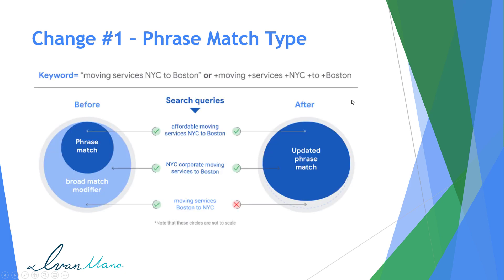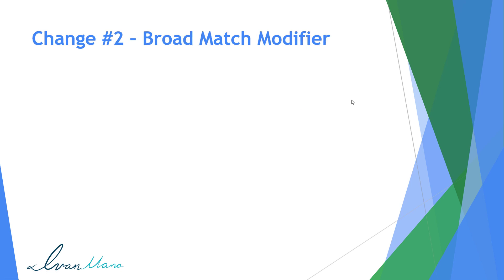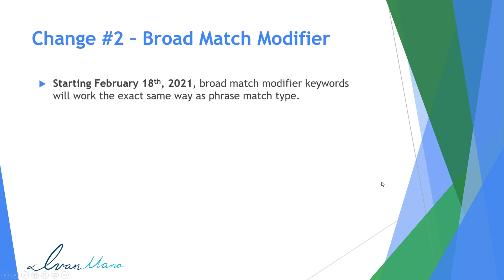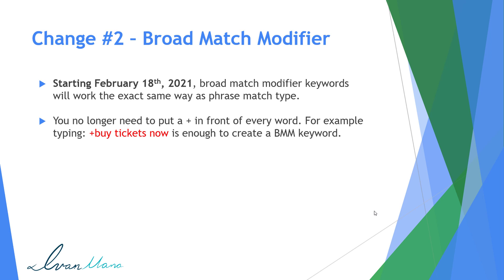So let's talk about broad match modifier type. With phrase match type overtaking the broad match modifier, what's going to happen with broad match modifier? Well, starting February 18th, 2021, broad match modifier keywords will work the exact same way as phrase match type. So obviously we know that to add new broad match modifier keywords, you no longer need to put a plus in front of every word. So before, if your keyword was 'buy tickets now' and you wanted to make it broad match modifier, you had to add a plus to every single one of those words.